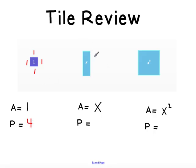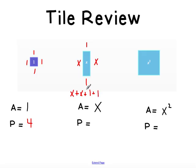If we talk about our x tile, we have that same length on the top and bottom, which is 1. And our other sides are unknown, so we call them x. Our area is 1 times x, which is x. And our perimeter is x plus x plus 1 plus 1, which combines to 2x plus 2.